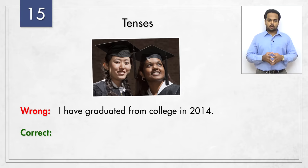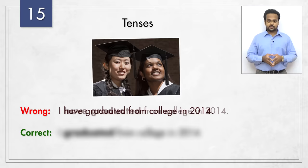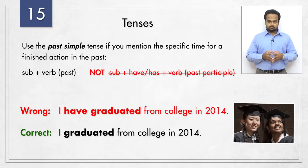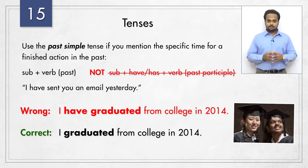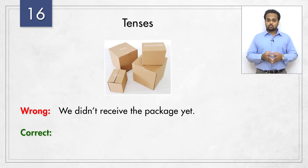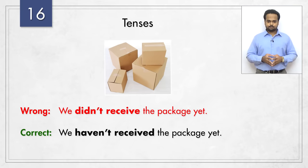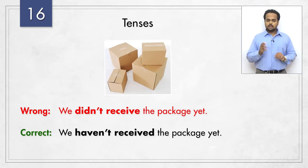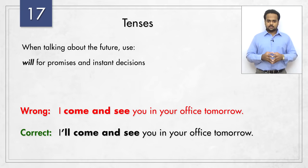Number 15 – 'I have graduated from college in 2014' is a common mistake. You should say 'I graduated from college in 2014.' If you mention the time when something happened, like 'in 2014,' you should use the past simple tense and not the present perfect. Similarly, 'I have sent you an email yesterday' should be 'I sent you an email yesterday.' Or you can just say 'I have sent you an email' and it will be understood that you sent it recently. Next: 'We didn't receive the package yet' should be 'We haven't received the package yet,' because 'yet' means 'until now' and we are not mentioning any specific time, so you should use the present perfect and not the past simple.